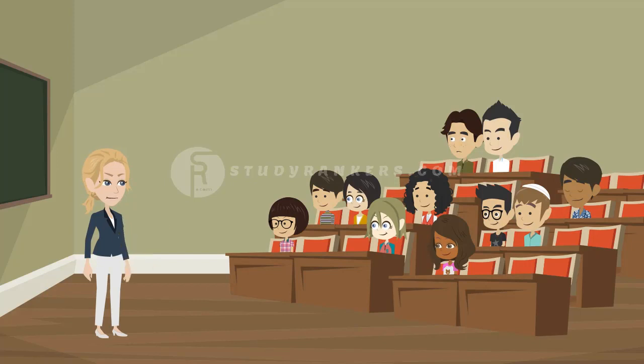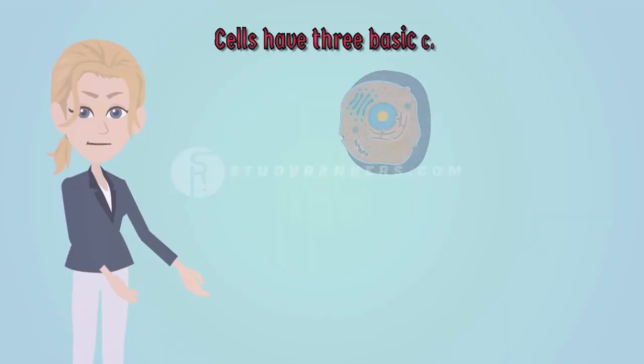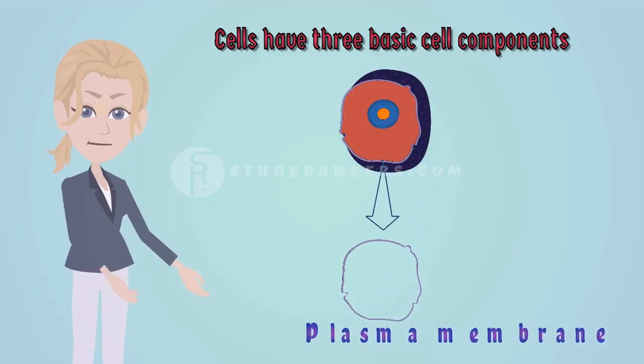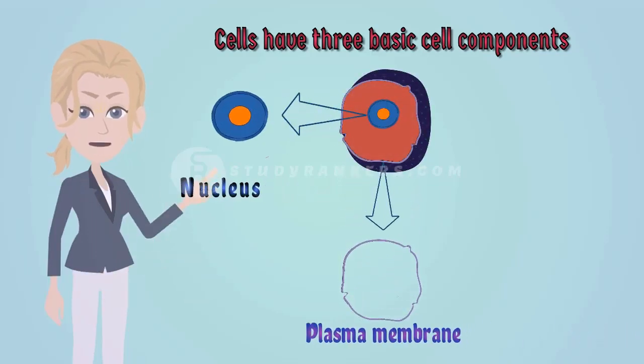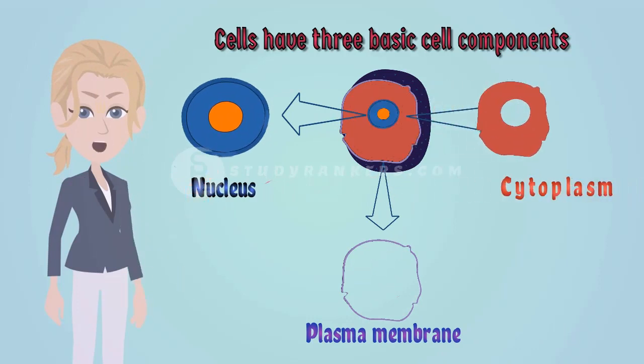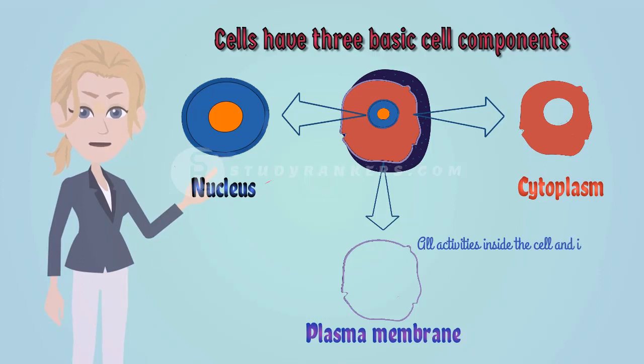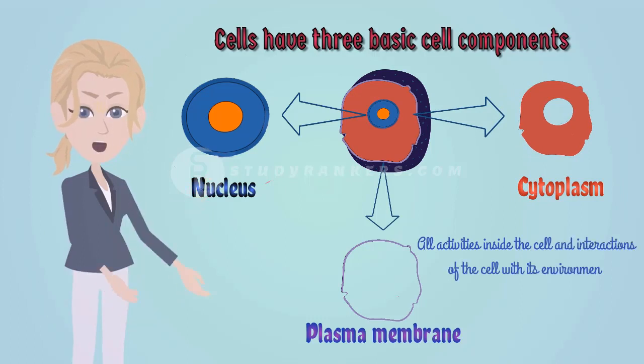If we examine a cell under the microscope, we find that cells have three basic components: plasma membrane, nucleus, and cytoplasm. All activities inside the cell and interaction of the cell with its environment are possible due to these features.